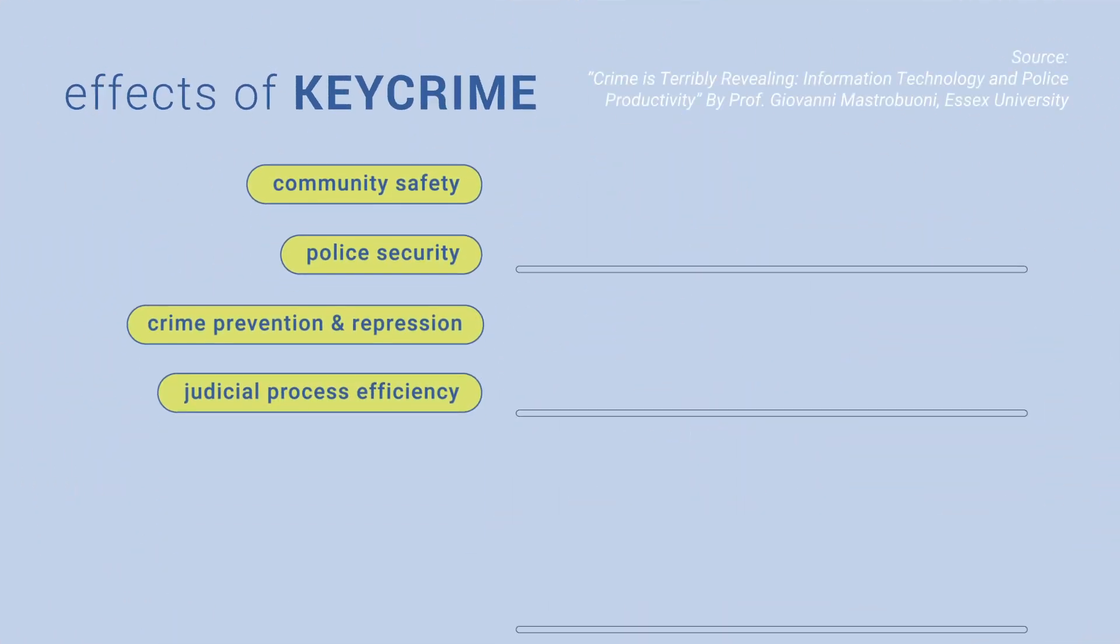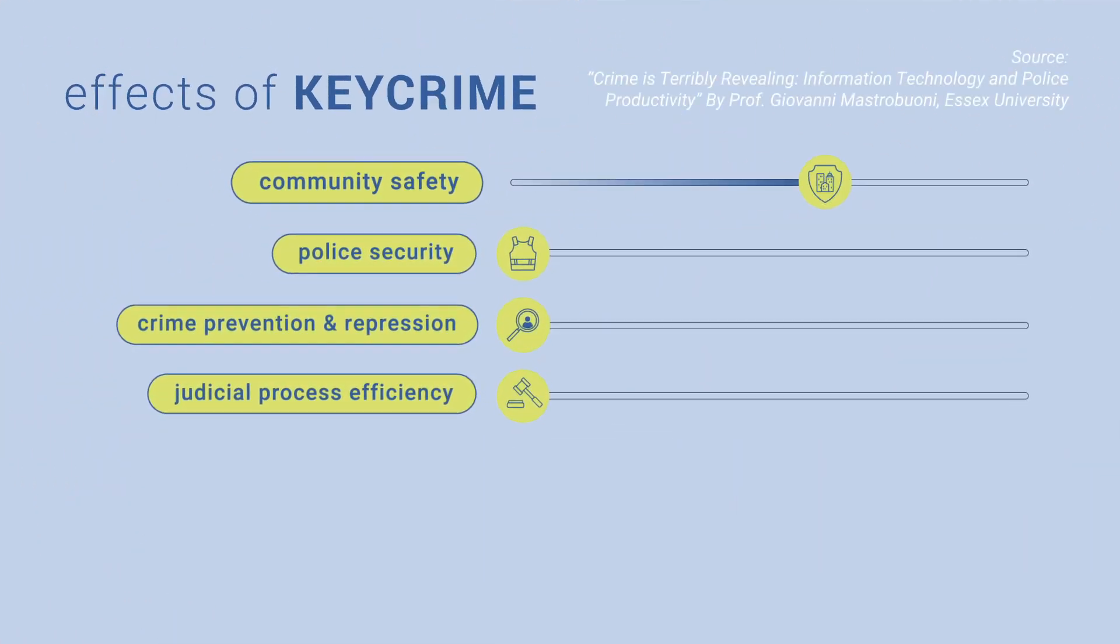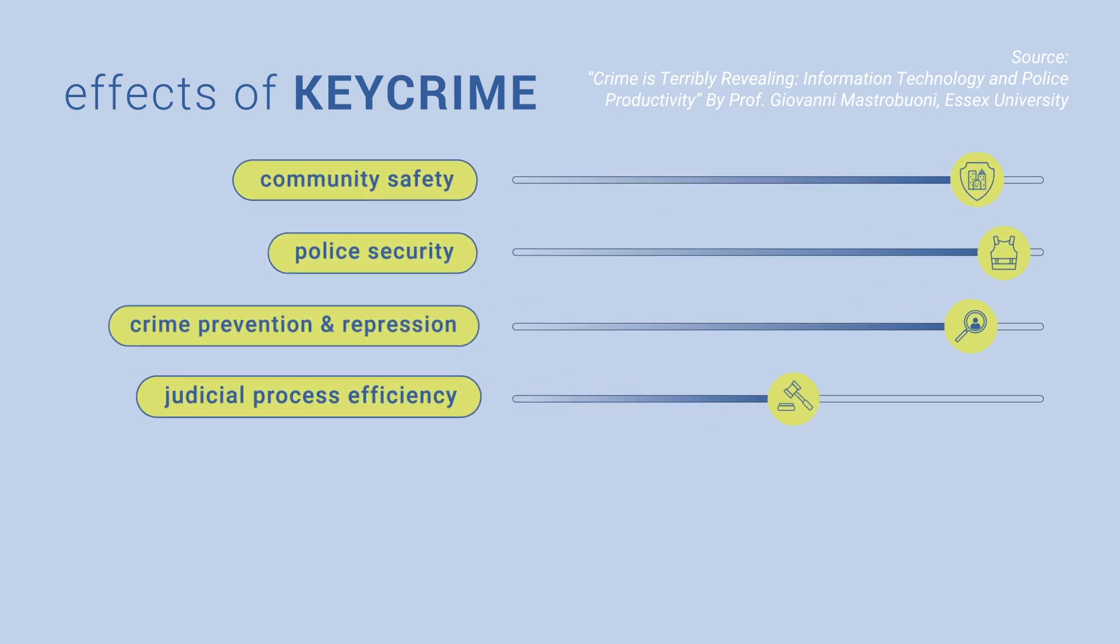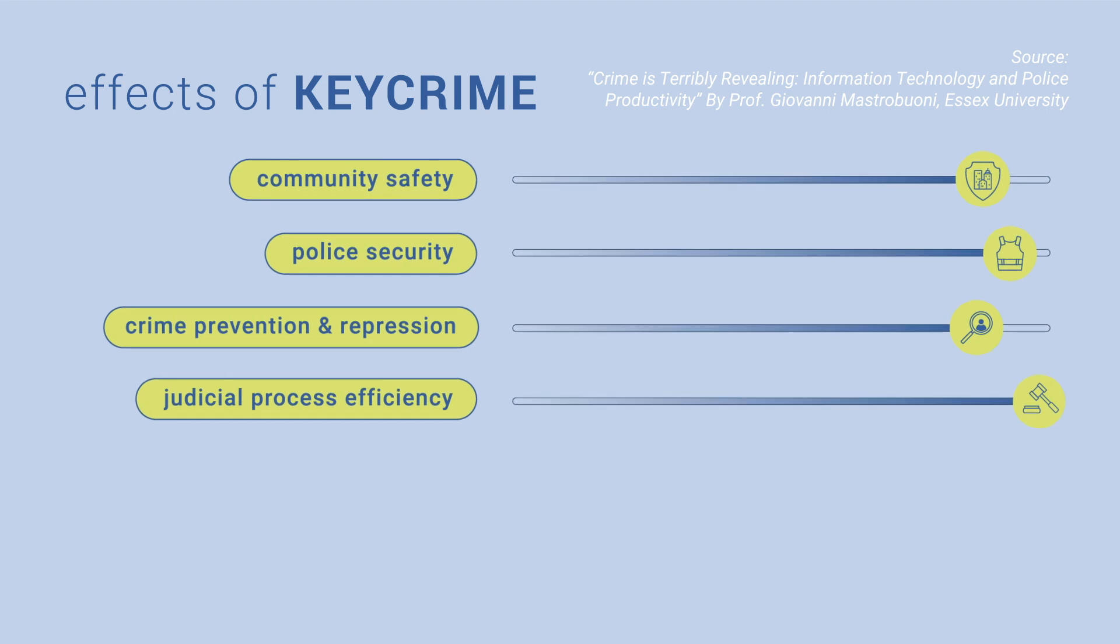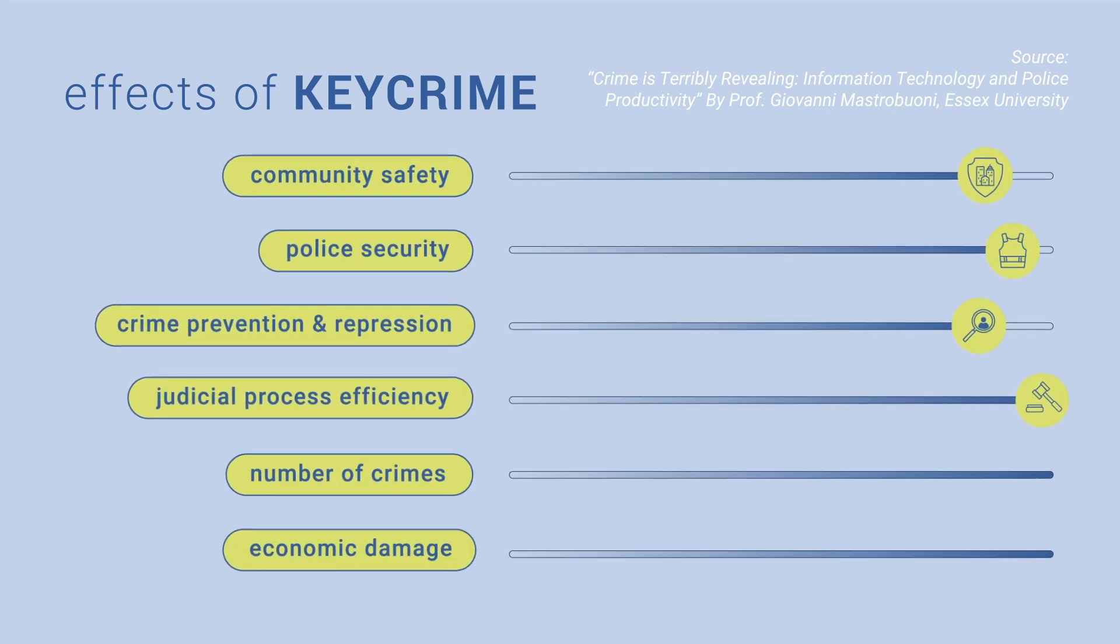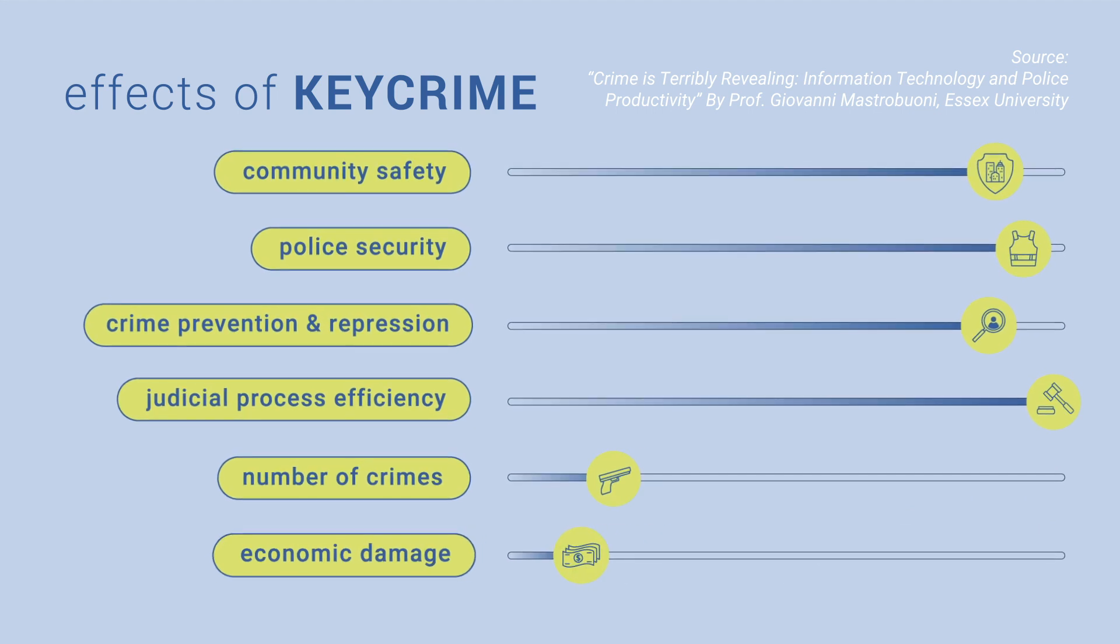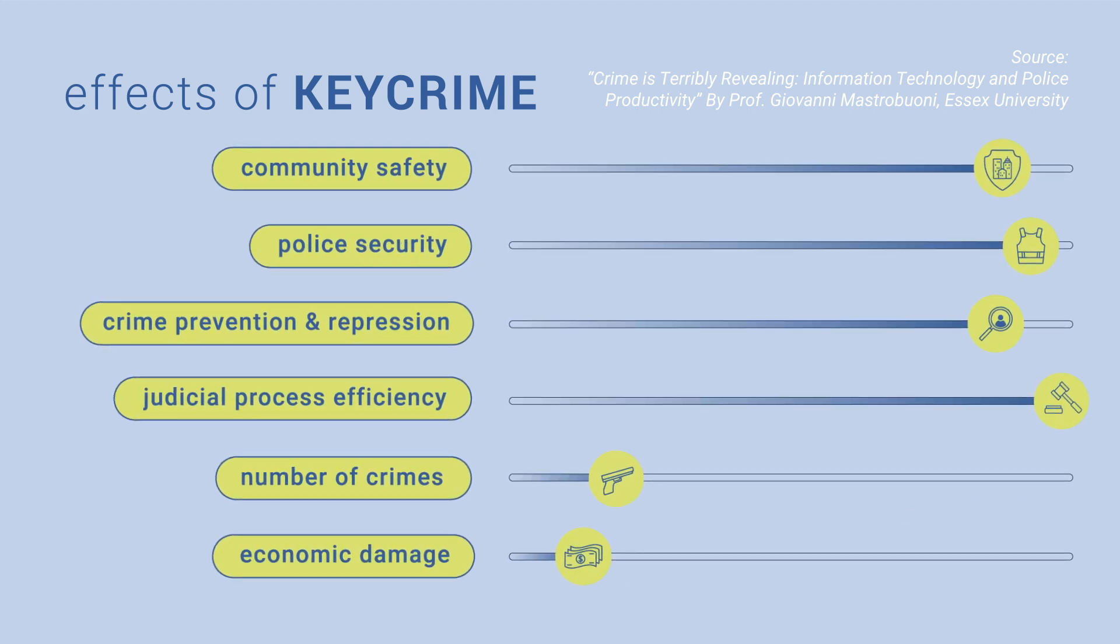It has been proven that Keycrime improves community safety, police security, crime prevention and repression, and makes judicial processes faster and more accurate, leading to a reduction in the number of crimes and economic damage to the community, both tangible and intangible.